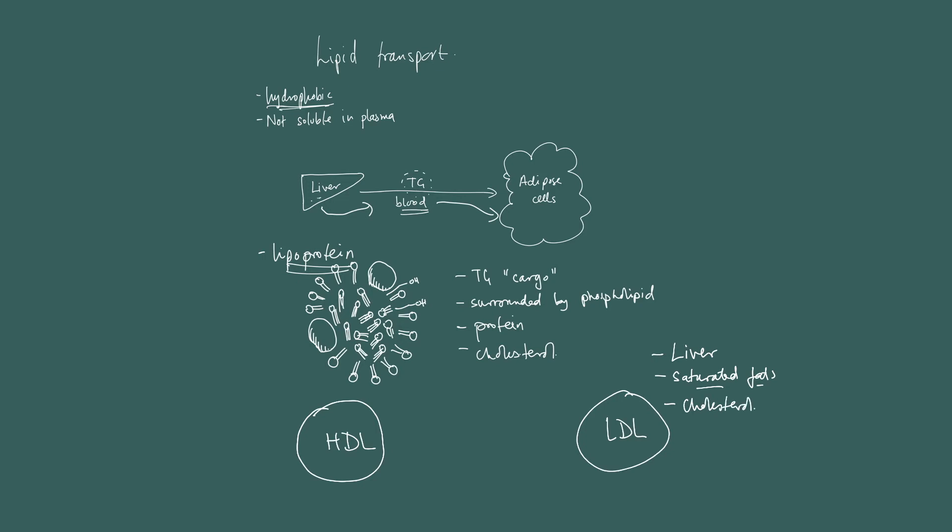Because they have more saturated fats and cholesterol, that's what makes them low density. The greater the proportion of lipid you have, the lower the density becomes. Hence why oil floats on water—the oily component has a lower density than the water. So the greater the fat content, the lower the density. The LDLs are what is linked to increased risk of CVD.